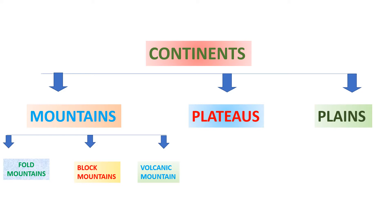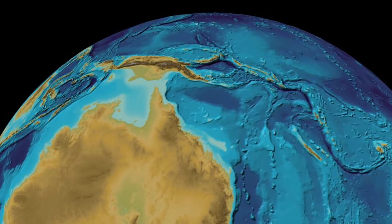The relief features of the continent are the same everywhere because the lithosphere is divided into a series of plates that fit together like pieces of a jigsaw puzzle. Just as jigsaw puzzle pieces are interrelated and joined together to make a complete picture, the plates in the lithosphere are connected and related to each other.